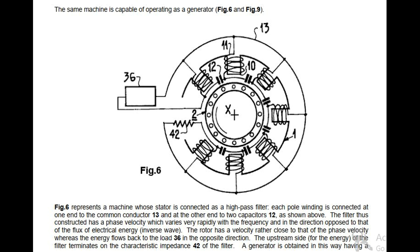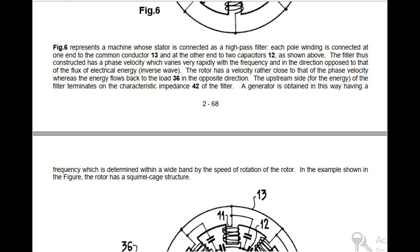The same machine is capable of operating as a generator, Fig 6 and Fig 9. Fig 6 represents a machine whose stator is connected as a high-pass filter. Each pole winding is connected at one end to the common conductor 13 and at the other end to two capacitors 12, as shown above. The filter thus constructed has a phase velocity which varies very rapidly with the frequency and in the direction opposed to that of the flux of electrical energy, inverse wave. The rotor has a velocity rather close to that of the phase velocity, whereas the energy flows back to the load 36 in the opposite direction. The upstream side, for the energy, of the filter terminates on the characteristic impedance 42 of the filter. A generator is obtained in this way having a frequency which is determined within a wide band by the speed of rotation of the rotor. In the example shown in the figure, the rotor has a squirrel cage structure.